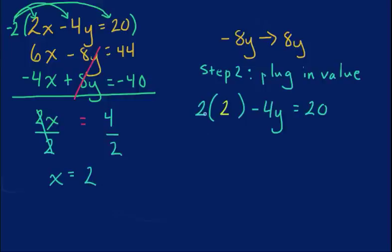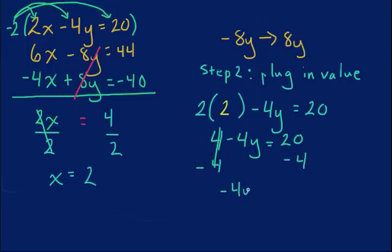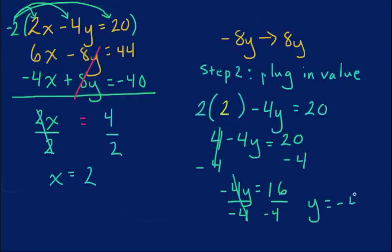I'm going to plug the 2 in instead of the x because x equals 2. 2 times 2 gives me 4, so I have 4 minus 4y equals 20. I want to isolate the variable, so I'm solving for y. I subtract 4 from both sides. That cancels out, and I'm left with negative 4y equals 20 minus 4, which gives me 16. Then I divide both sides by negative 4, and y equals negative 4.